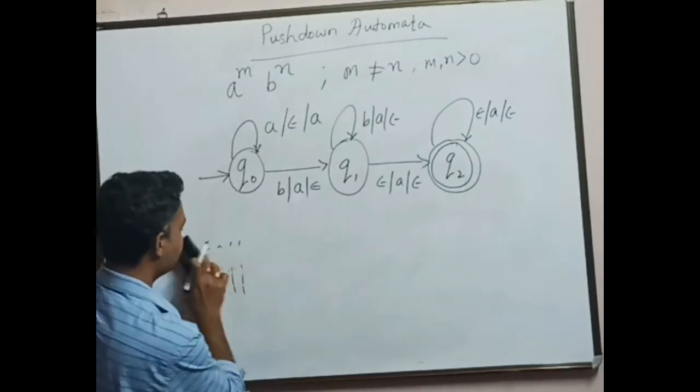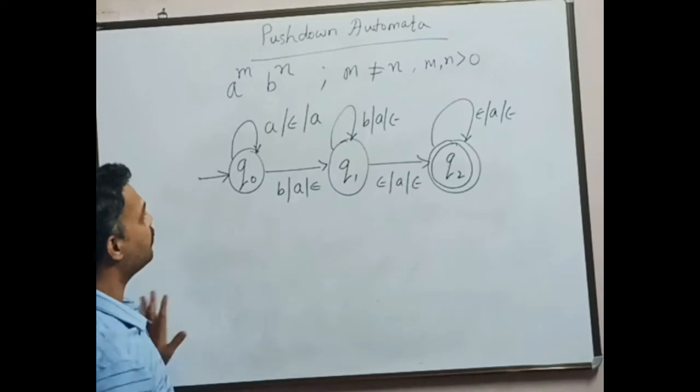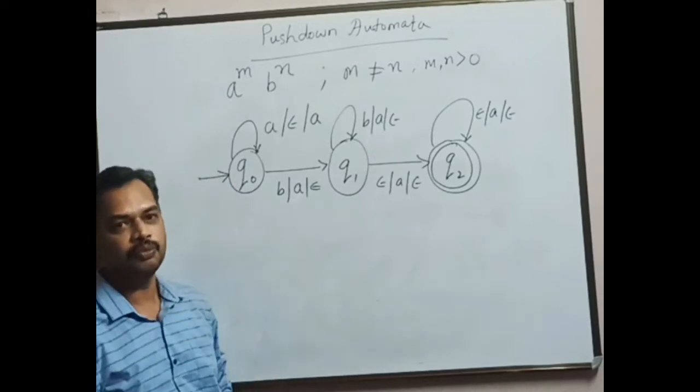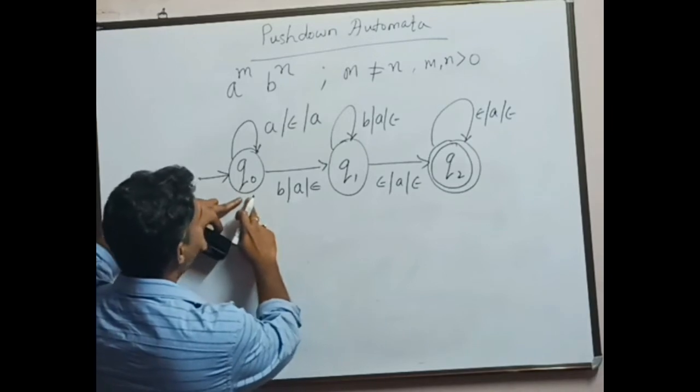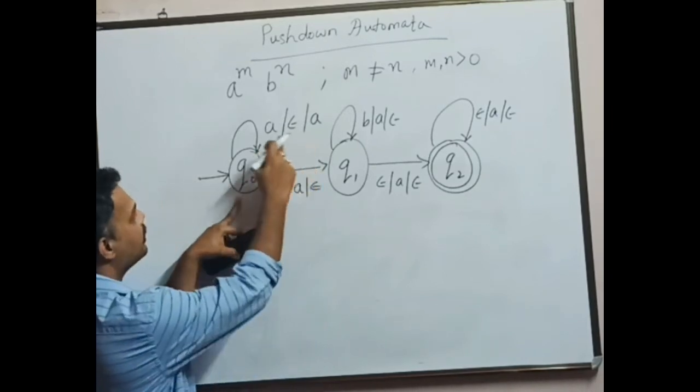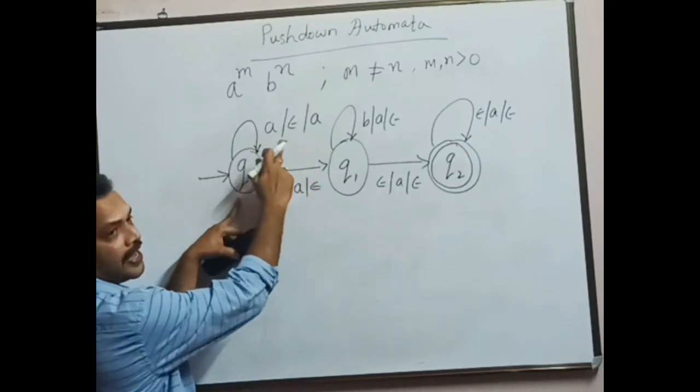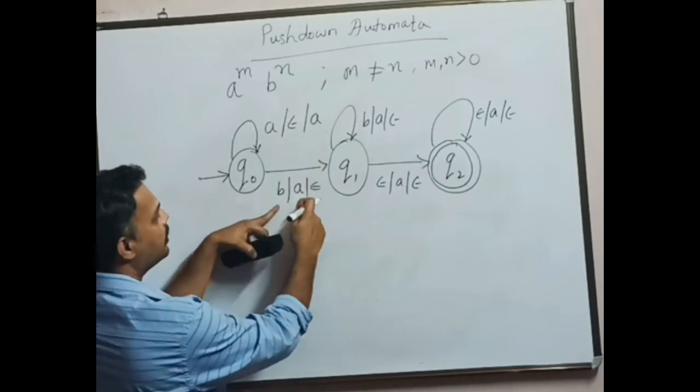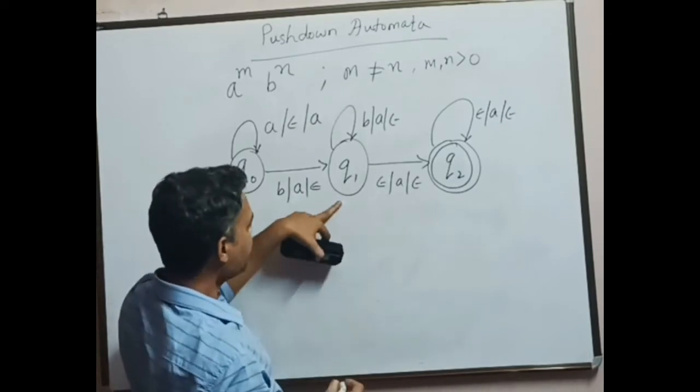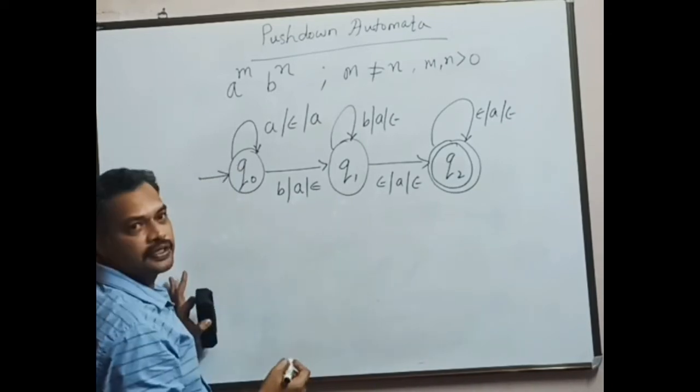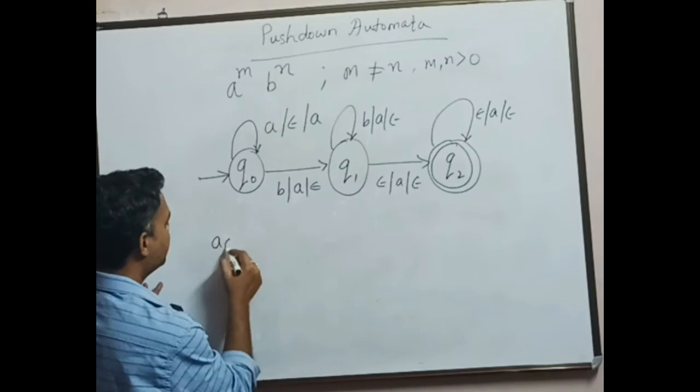We have another part to address: what if the number of a's are less than the number of b's? Once again, we'll have the same rule. If a is encountered, a is pushed. If b is encountered, a is popped. Now in this regard, what happens is if there are more number of b's...